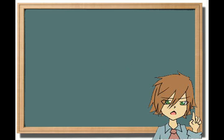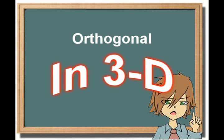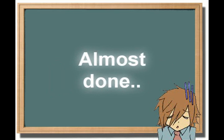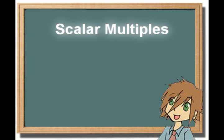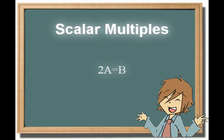One use for the cross product is to find a vector that is orthogonal — a.k.a. perpendicular in three dimensions — to two existing vectors. Now, a couple last minute things. Two vectors are parallel if they are scalar multiples of each other. For example, if vector a is 1, 2, 3, and vector b is 2, 4, 6, they are scalar multiples, because if vector a is multiplied by 2, it equals vector b.